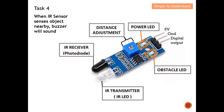Let's understand Task 4. As I briefly told you earlier, basically when the IR sensor detects an object that is nearby, the buzzer will sound. So this will be Task 4. Before we go into deep detail on Task 4, let's take a look at this IR sensor.